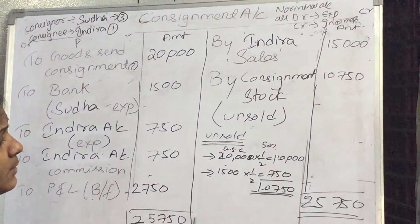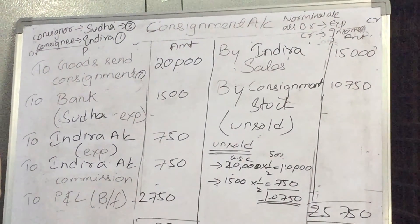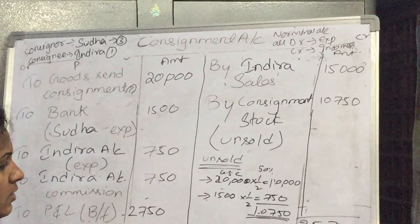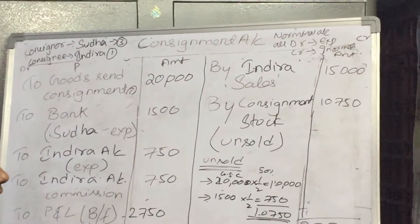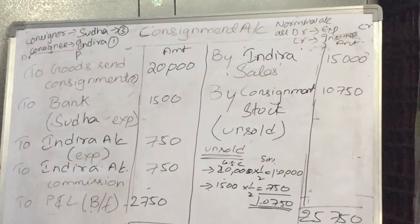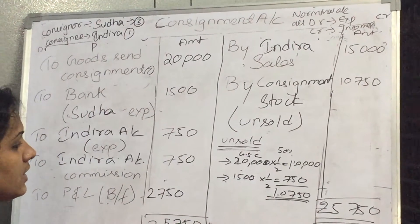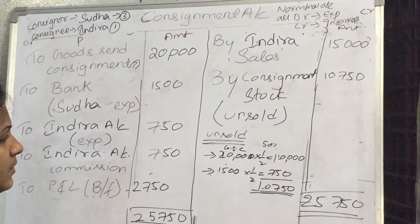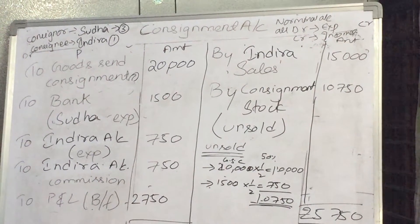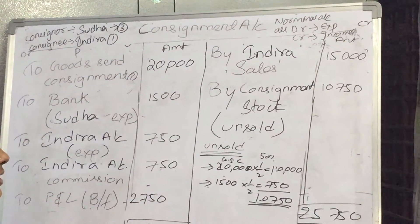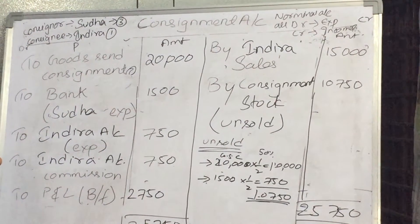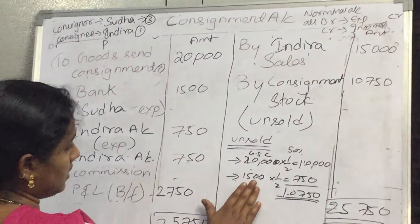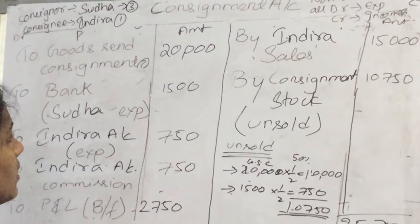Every time we should consider non-recurring expenses of the consignor. You can refer to page number 80 in the Telugu Academy textbook — you'll find non-recurring expenses of the consignor listed there. Every problem you should take non-recurring expenses of the consignor as per their nature, whether paid for freight, insurance, cartage, etc. You should refer to that table. This is the calculation of unsold stock.